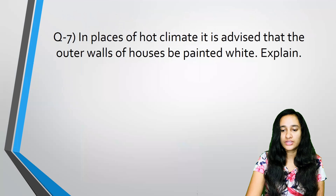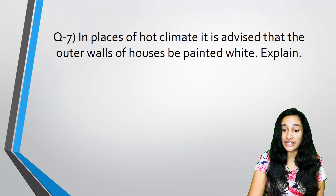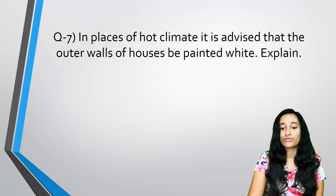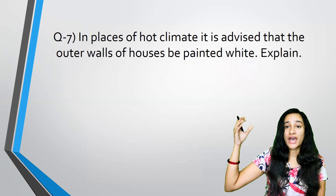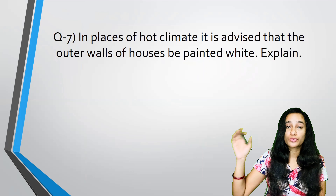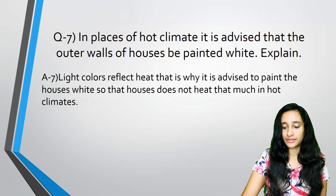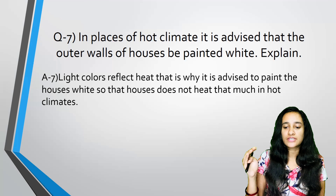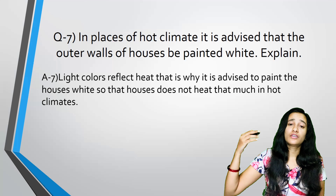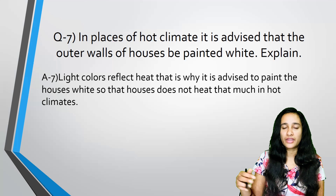In places of hot climate, it is advised that the outer walls of the house be painted white. Light colors reflect heat, so the outer walls remain cooler. That is why light-colored walls are preferred in hot climates.